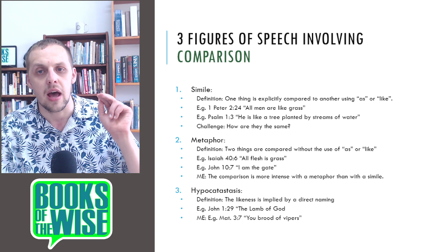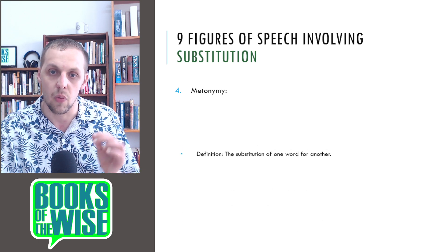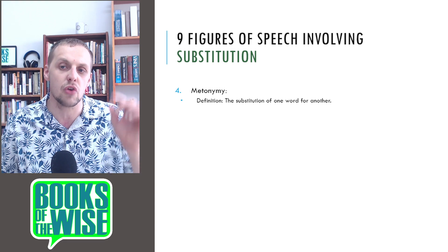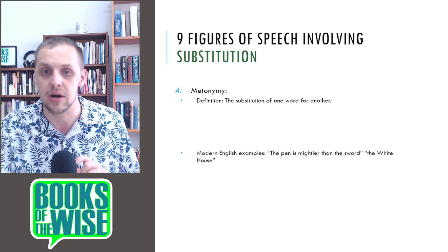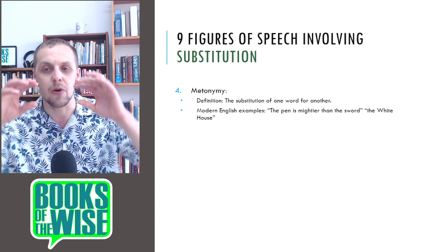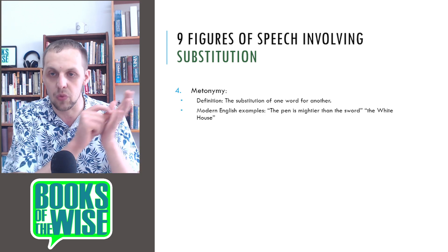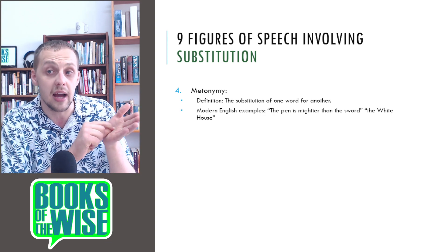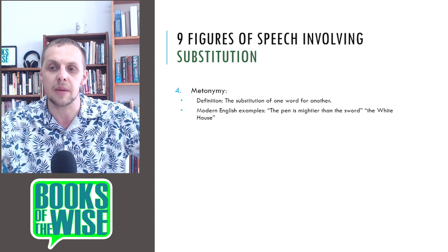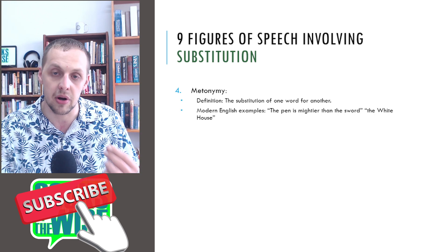The next nine figures of speech involve substitution — one word for another. The first is metonymy: the substitution of one word for another. In modern English: the pen is mightier than the sword — pen is substituted for written words. Or the White House, substituting for the president and cabinet. That's metonymy. In the Bible, Proverbs 12:18: the tongue of the wise brings healing — it's not really the tongue but the words of the wise.